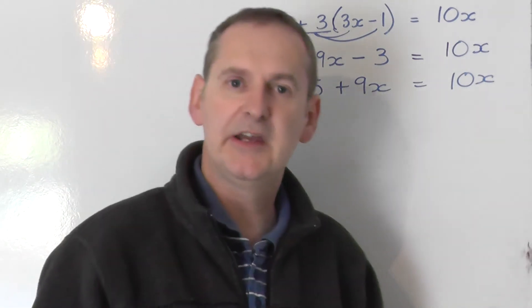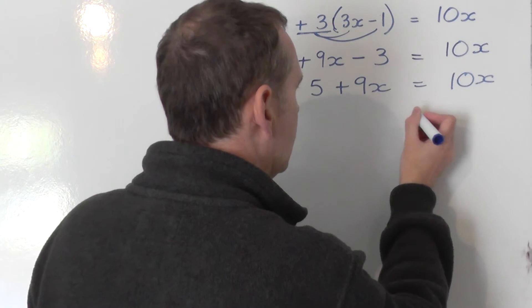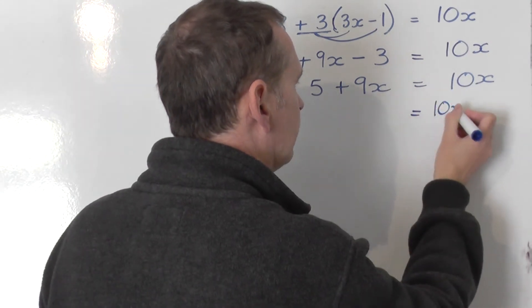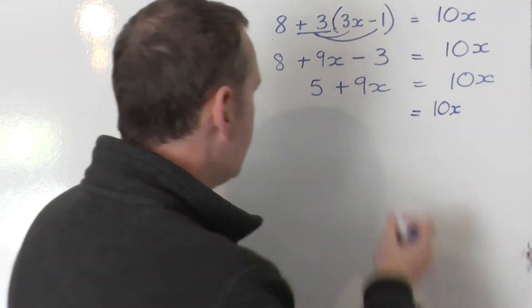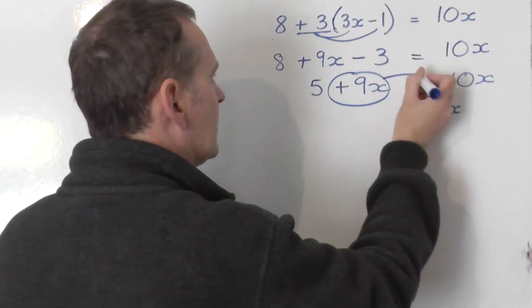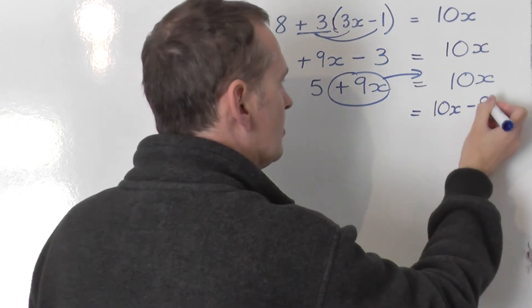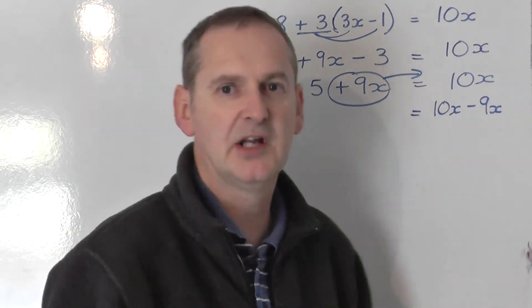Well, there's only the 5 on the left hand side. So on the right hand side I'm going to leave the 10x where it is. And that 10x doesn't swap sides so it doesn't swap sign. And I'm going to take the plus 9x, all of it, to the other side and it swaps to a minus 9x on the right hand side.